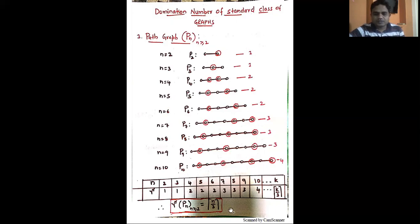The ceiling function means we round up: for example, the ceiling of 2.1 is 3, which is the greatest integer greater than or equal to the value. There is also a floor function — for example, the floor of 2.9 is 2, which is the lowest integer less than or equal to the value. So in general, the domination number of the path graph is the ceiling function of n by 3.